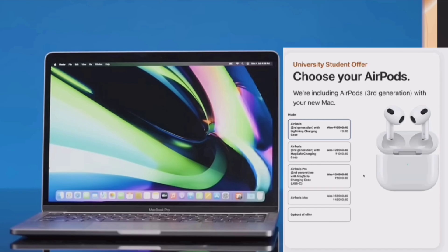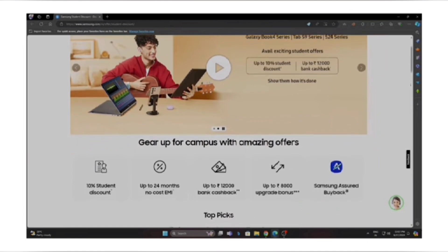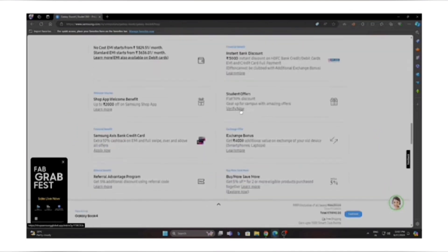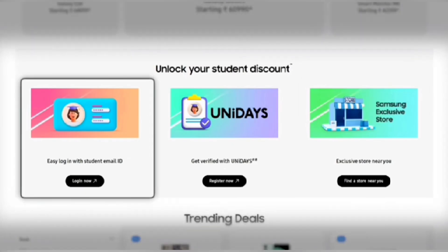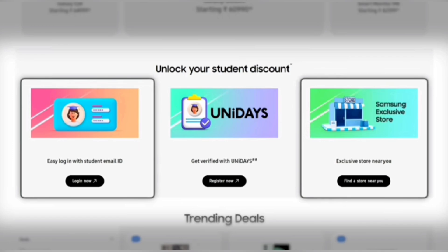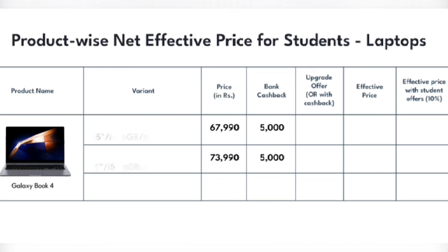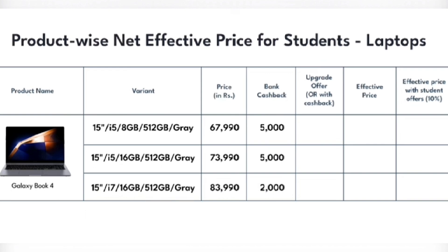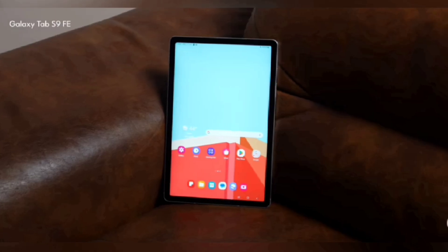Similarly, with MacBook Pro you are getting AirPods free. Now let's talk about the back-to-campus offers by Samsung on UniDaze. Here you can see the same interface — you sign in and this is UniDaze and Samsung Shop, and Samsung exclusive stores all over give the same product discount. For the first time ever, the Galaxy Book 4 Samsung laptop price has dropped to under 60,000 rupees — that's brilliant. You can also buy it from Samsung Shop where you get more bank discount and cashback.